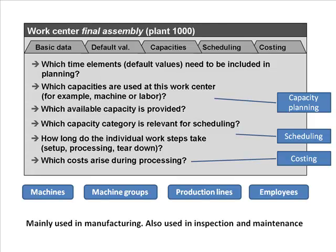Work centers are mainly used in manufacturing, but they're also used in inspection and plant maintenance. In a big plant with thousands of machines, those machines have to be maintained. Separate maintenance workshops — work centers not used for regular production but for maintaining the plant — are also represented as work centers. We'll look at those when we cover that particular chapter.